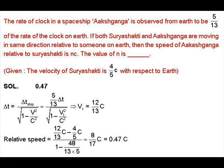Question 43: The rate of a clock in spaceship Aakashganga is observed from Earth to be 5/13 of the rate of the clock on Earth. By this concept, we can find the velocity of Aakashganga with respect to Earth. Applying Δt = Δt₀/√(1 - v²/c²), where v is the velocity with respect to Earth, we calculate v = 12c/13.